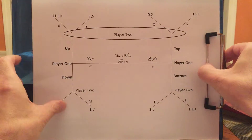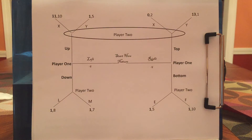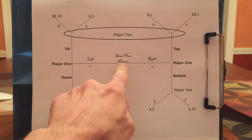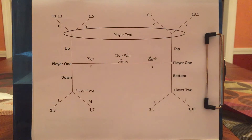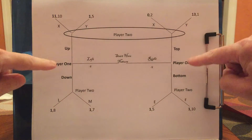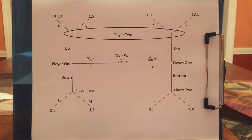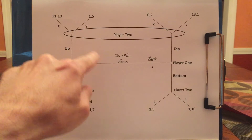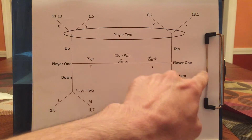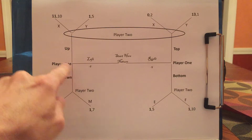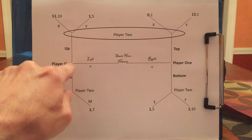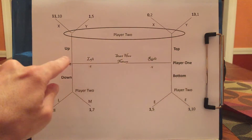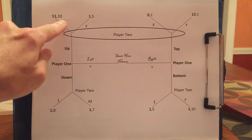Let's do a far more complicated game. In this game, nature moves left or right. After nature moves left or right, player 1 gets to move, and player 1 can go up or down. Basically, nature will make player 1 either a lefty or a righty. If nature moves left, player 1 will know that he's a lefty because there's no uncertainty concerning player 1, and then player 1 will decide to go up or down.